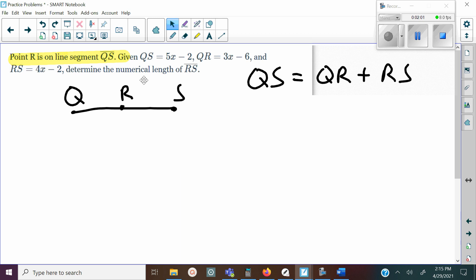Now once we got that set up, all we have to do is plug in the actual representation for each one. So I plugged in the 5x - 2, 3x - 6, and 4x - 2. You can see that this is the 5x - 2 for QS, the 3x - 6 for QR, and the 4x - 2 for RS.